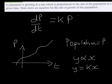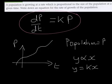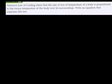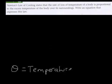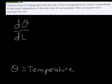So dp/dt = kP is the differential equation. Now let's look at another example. Newton's law of cooling states the rate of loss of temperature of a body. Let's decide to have the temperature equal to theta — it's not a good idea to use t for temperature because we've got time as well; that would get too confusing. So the rate of loss of temperature is d-theta by dt, which is the way in which the temperature is changing.